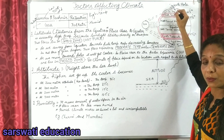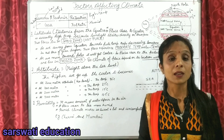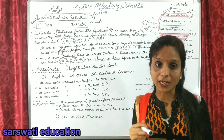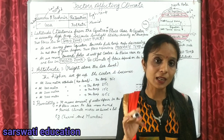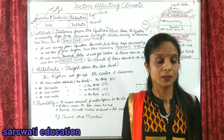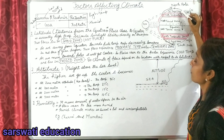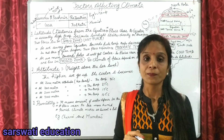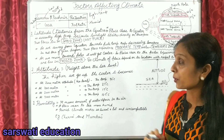As we move further towards the pole, the temperature becomes very low and the area becomes very cold. This type of zone is known as the frigid zone. So the climate of a place depends upon its location with respect to its latitude.